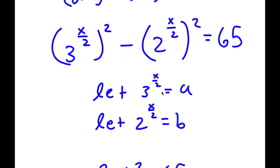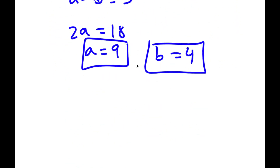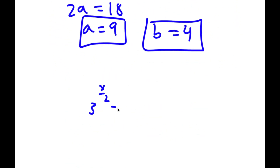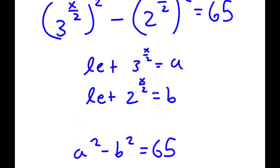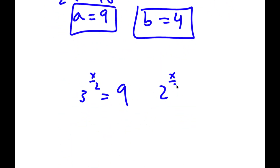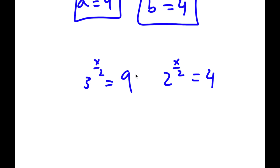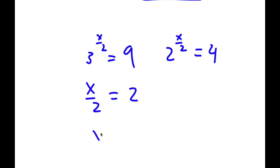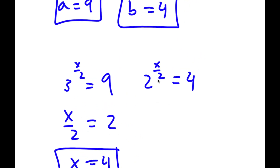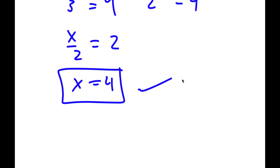Going back, I have 3 to the power of x over 2 is equal to 9, and 2 to the power of x over 2 is equal to 4. So 3 to the power of 2 is obviously equal to 9, so I have x over 2 is equal to 2, meaning x is equal to 4. If we plug in 4, we get 2 to the power of 2 equals 4, and 4 equals 4, so that works out. So 4 is my solution.